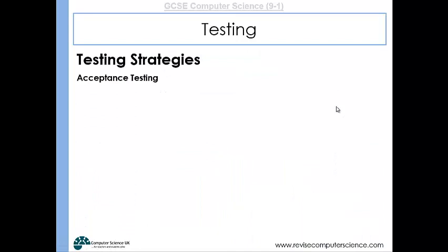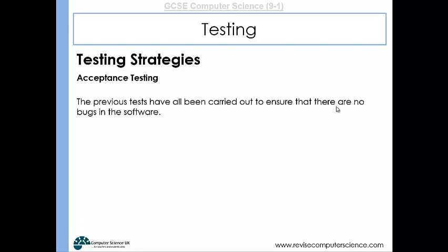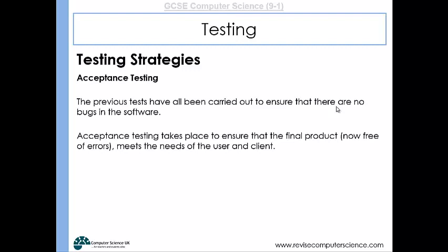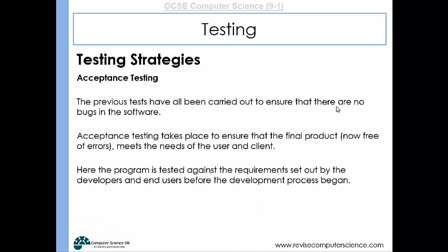Now, there is also acceptance testing. Remember that any program that's written, it's written for a purpose. It's got to do some function, usually for an end user. So the previous tests have all been carried out to ensure that there's no bugs in the software, but acceptance testing takes place to ensure that the final product meets the needs of the user or the client. And this is where the program is tested against the requirements set out by the developers and the end users before the development process began.